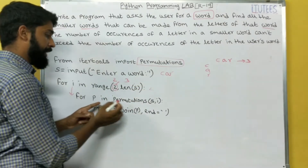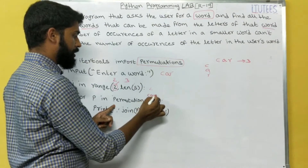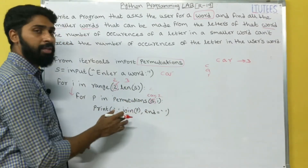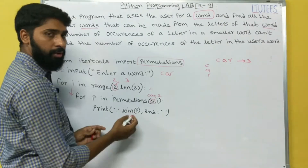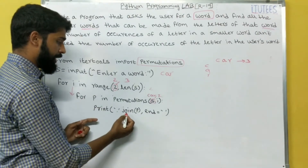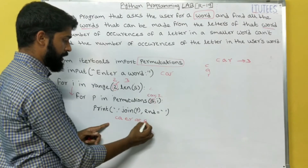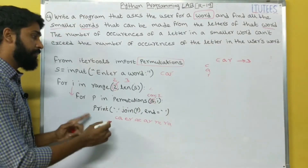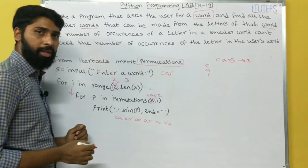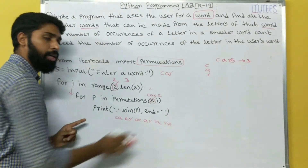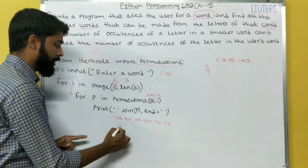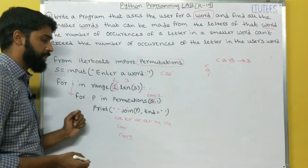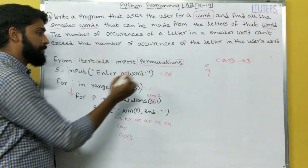We enter into this block: for P in permutations of S with value i. What is S? C, A, R. And what is the i value? 2. That means permutations of 'car' with 2 gives all combinations of two letters. In the first iteration we get: C-A, C-R, A-C, A-R, R-C, R-A. Only one time we enter this block. If we give more characters, then we enter two times — in the first iteration printing all two-character words, in the next iteration all three-character words, and so on. I hope you all understand the purpose of permutations.